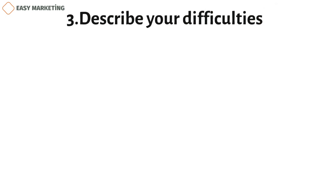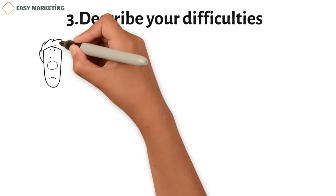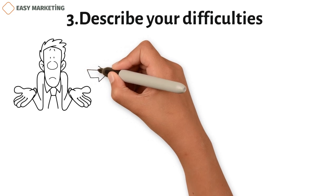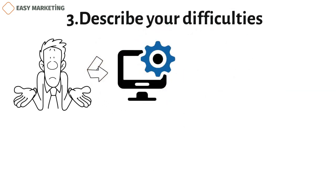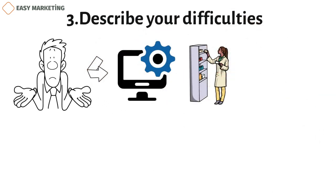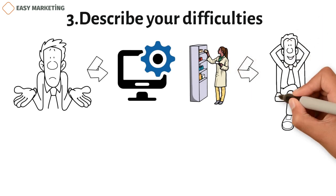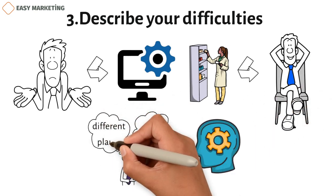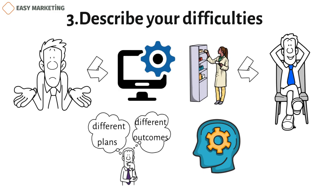Step 3: describe your difficulties. Figure out where you'll likely have trouble reaching your goals once you've set them. For example, your software might change, your shopping habits might change with the seasons, or something might happen outside. By going over these, you can come up with focused, flexible ways to deal with these problems. Think about making different plans for different possible outcomes and situations related to the problems you found.